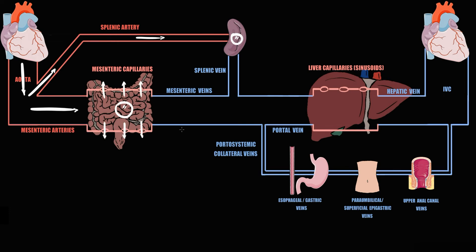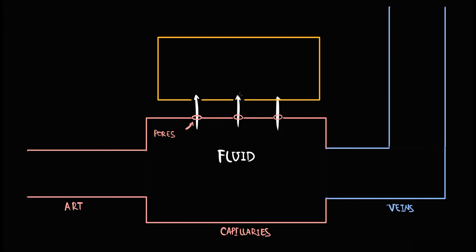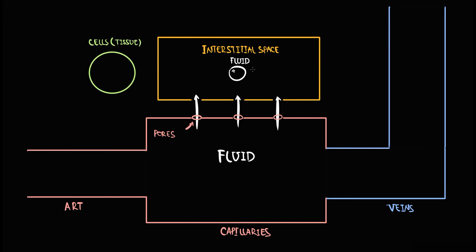The cardiovascular system is a closed system where fluid exchange occurs in capillaries because capillaries have pores. We have an afferent vessel that delivers blood to capillaries, an efferent vessel that provides outflow of blood from capillaries, and capillaries that have pores. Through these pores, fluid with nutrients can enter the interstitial space, from which cells that compose a particular tissue receive vital substances.